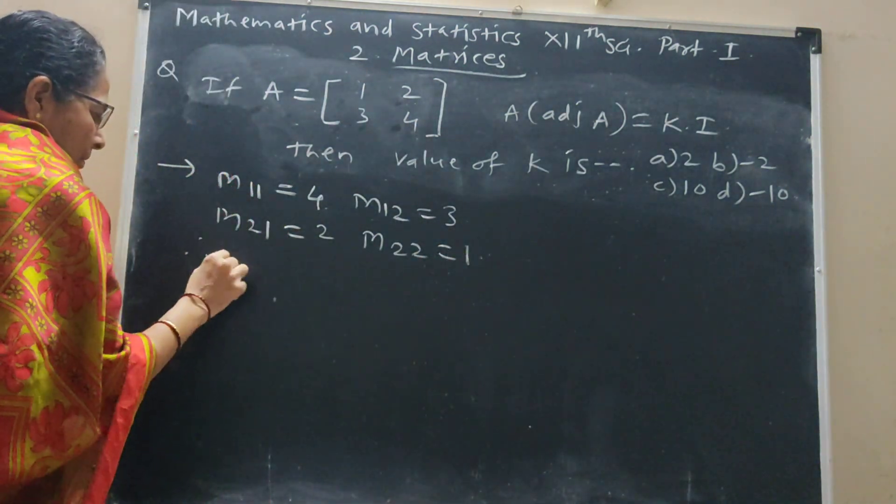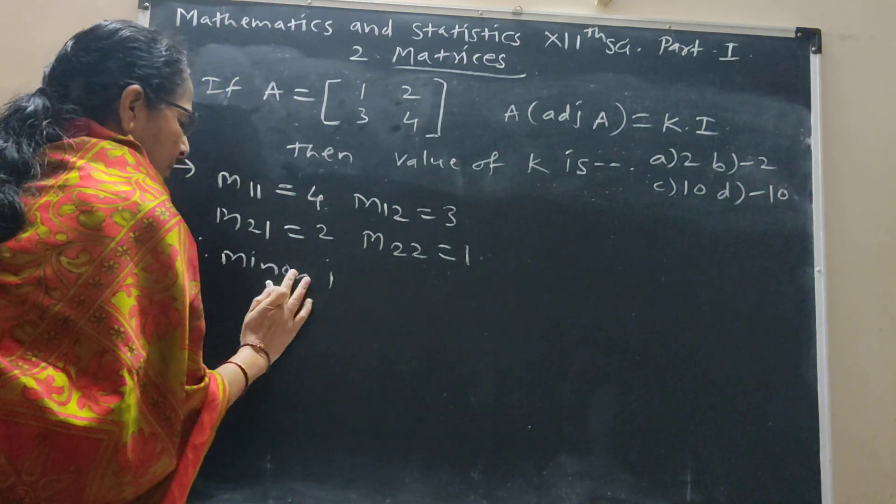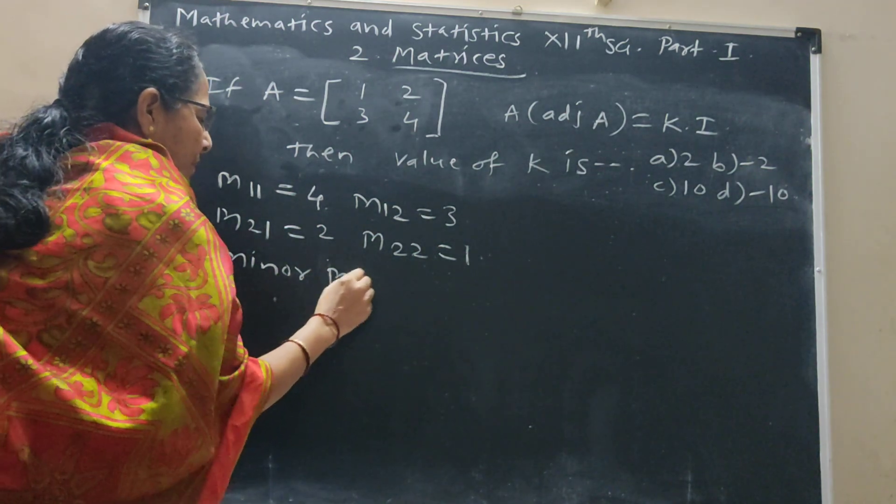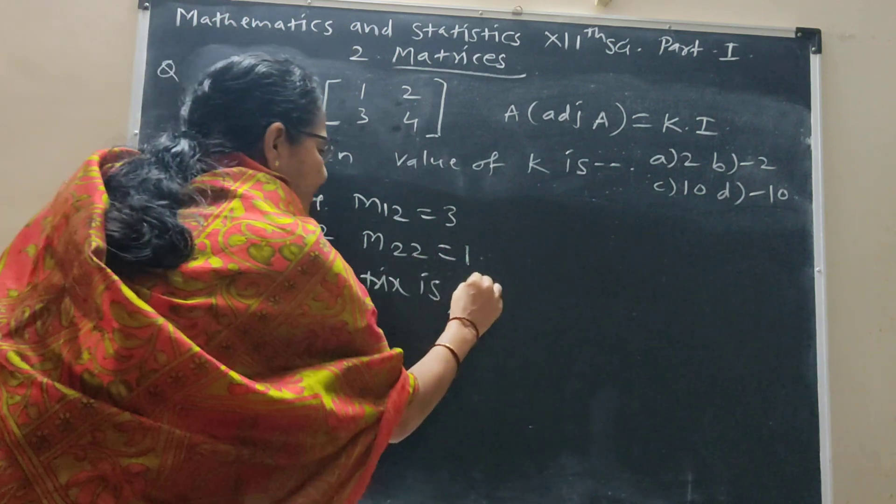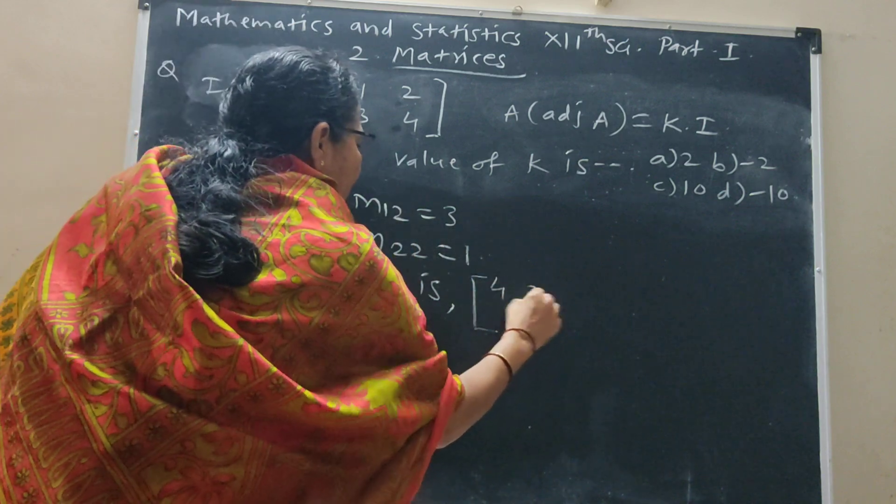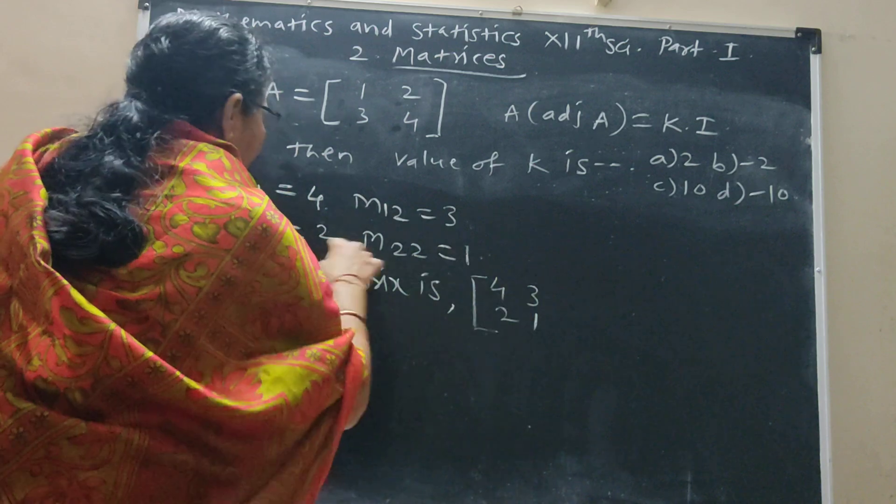So, the minor matrix is [[4, 3], [2, 1]]. 4, 3, 2, 1.